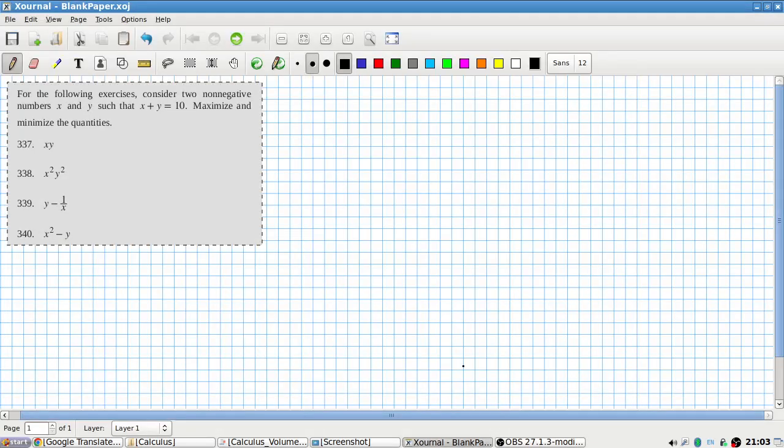Okay, let's have a look at this one. The following exercise is: consider two non-negative numbers x and y. I guess so one of them could be zero. Maximize and minimize the quantities.